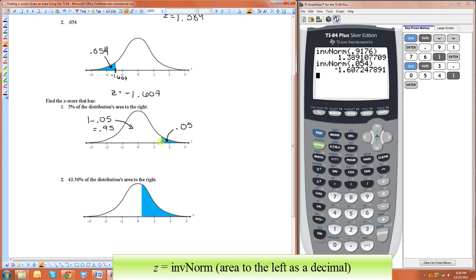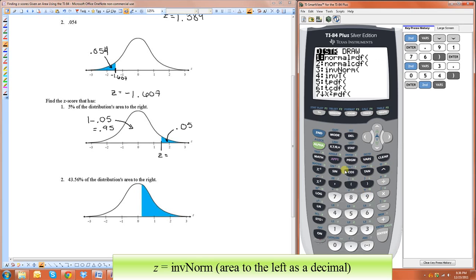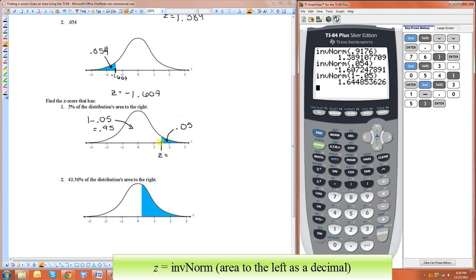So when we do this in our calculator to find this z, we have to put the 0.95. You can also, if you're feeling a little lazy, just do 1 minus 0.05 in there. And it'll do the same thing. So this z-value is 1.645.